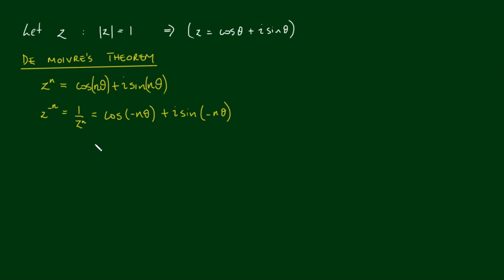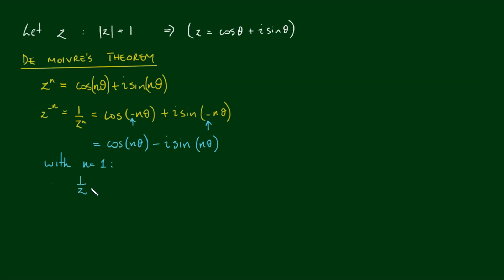Now cosine being an even function, it doesn't matter what the sign in here is, so cosine of negative n theta is still equal to cosine of positive n theta. Sine being an odd function, sine of negative n theta would actually be equal to negative sine of n theta, so we have negative i sine of n theta. With n equals 1, this means 1 over z is equal to cosine theta minus i sine theta, which can equally be expressed as z to the negative 1.